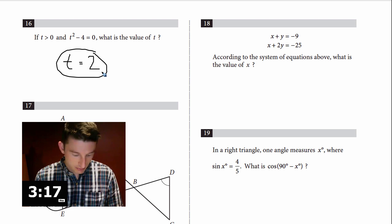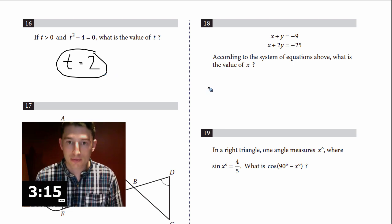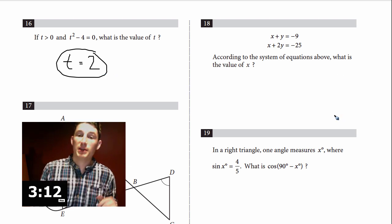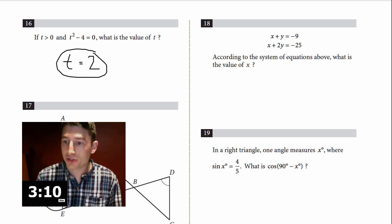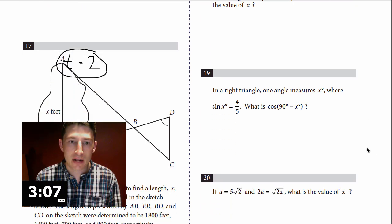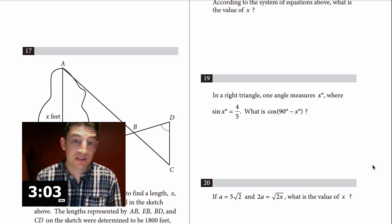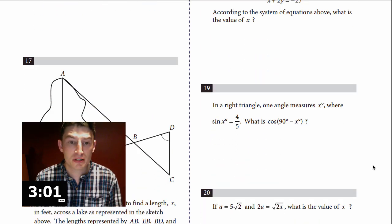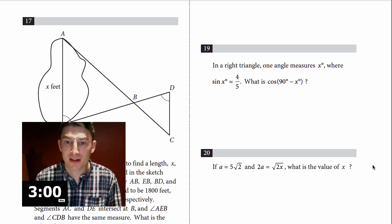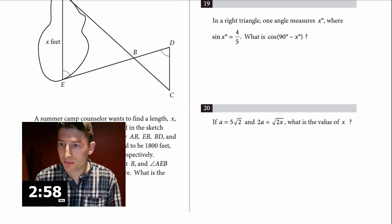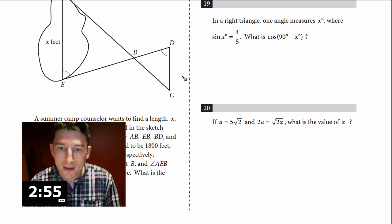We only have about three and a half minutes left and I'll probably run over trying to explain things. With this little time left, what questions am I not going to do? I'm scared of number 17 — I don't know what it is, so I'm skipping it for now. Number 20 looks short and easy — I can read it fast. Let's try that one.